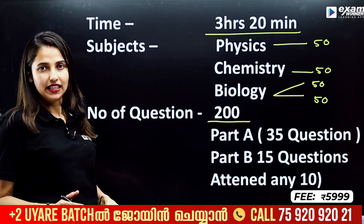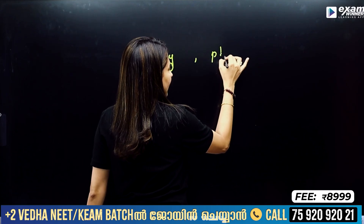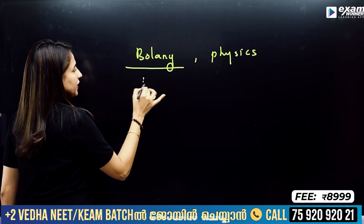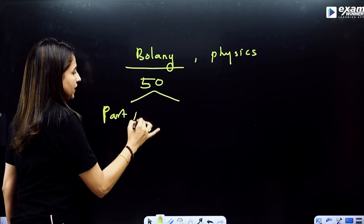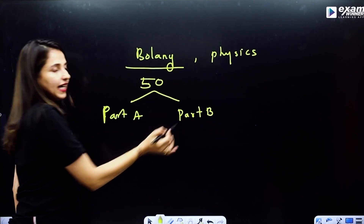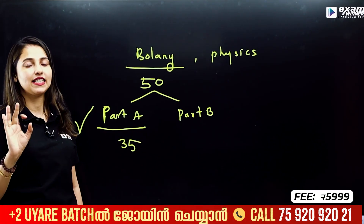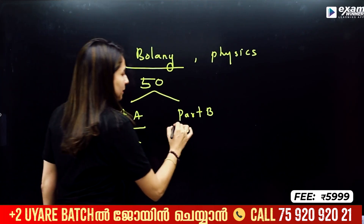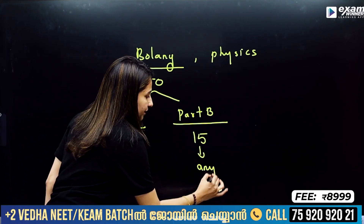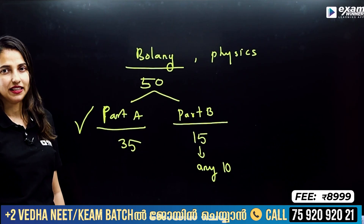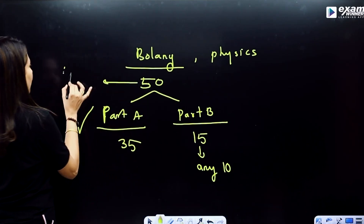For any subject — Botany, Physics, or any subject — we have 50 questions. We have 2 parts: Part A and Part B. In Part A, you have 35 questions, and this is compulsory — you must answer all questions. In Part B, we have 15 questions, out of which you answer any 10. In total, you have 45 questions to attempt.